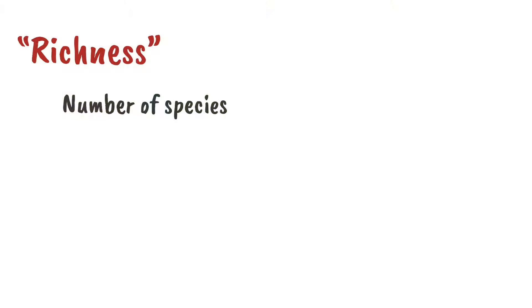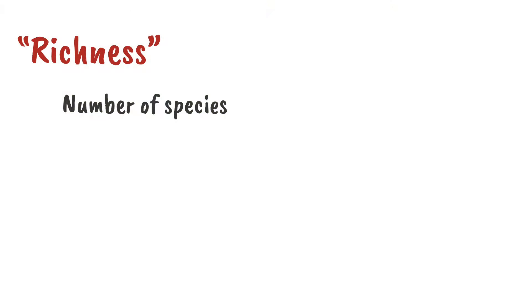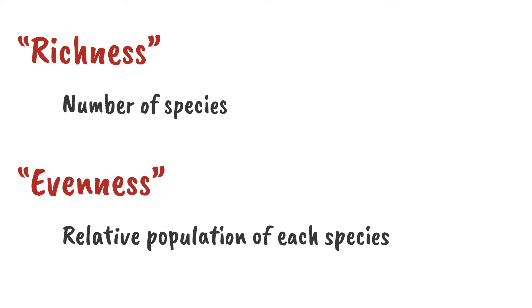We call that species richness, but species diversity is made up of both the richness and evenness of the species there. Species evenness tells us the relative population of each species. An ecosystem dominated mainly by one species has a lower evenness and a lower species diversity, all other things being equal.